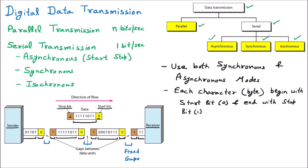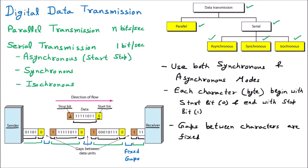For example, after sending a start bit, data, and stop bit, if I tell you the next packet will come in five minutes, you remain free for five minutes and then become active again when my next start bit arrives. Every five minutes you receive the message. Because the gaps are fixed, the speed is slightly faster than asynchronous. All gaps between characters are fixed — this is the key property of isochronous.